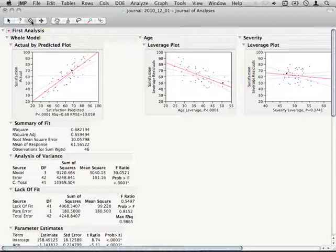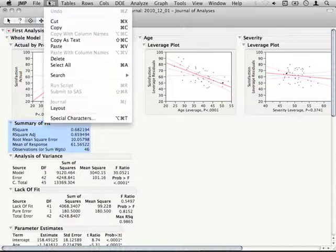So once you select the selection tool, you simply have to select any section of the output or if you click on the heading, it'll select that whole section and then simply go to edit, copy.